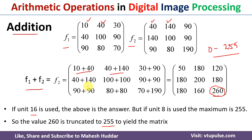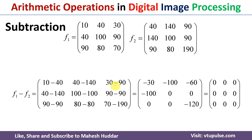The number of bits used to represent each pixel should be known so we can make the correct decision. The next operation is subtraction: F1 minus F2. The first pixel is 10 minus 40, the second is 40 minus 140, then 30 minus 90, and so on. This gives us minus 30, minus 100, minus 60, and other values.